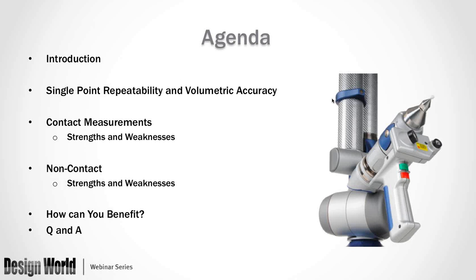After that, we're going to jump into the different types of contact measurements — the variety of types, as well as some challenges and benefits associated with each. After the contact measurement section, we'll jump into non-contact measurement solutions, mostly those that apply to articulated arm coordinate measuring machines. Finally, we'll have that industry-based comparison, and then there will be a question and answer session after the presentation.